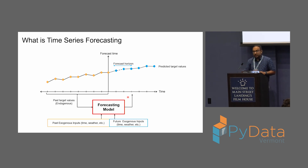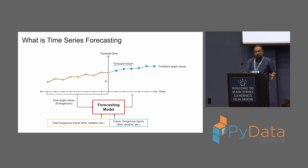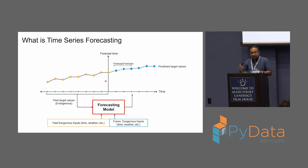Forecasting entails predicting the future value of a time series signal from the data we have observed thus far. Say we are at a point in time and have all the yellow points available — the goal is to predict the value of the signal in the next few time steps, say the next three, which is called the forecast horizon. This tends to be application dependent, but we can also iterate: as more data comes in, we continuously keep predicting the next few values based on whatever observed data we have thus far.